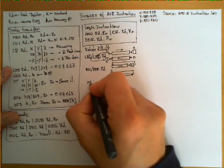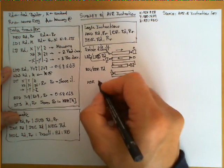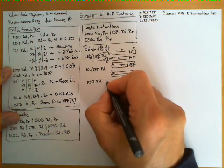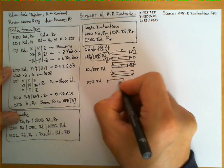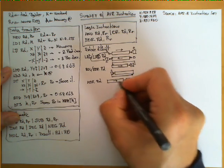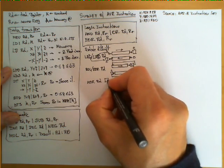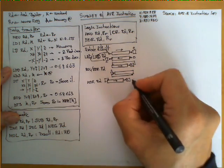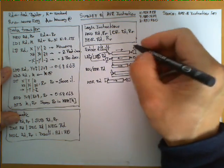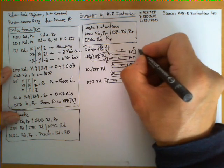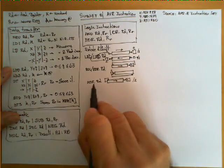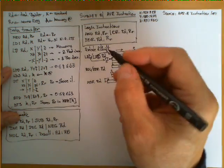Finally, there is one additional instruction: ASR RD, which is arithmetic shift right. It shifts to the right, the last bit goes into the carry, but the most significant bit is replicated. This is similar to dividing by two for signed integers, whereas LSR and LSL are equivalent to dividing or multiplying by two for unsigned numbers.